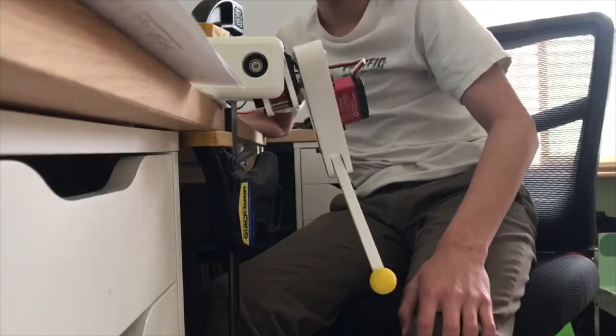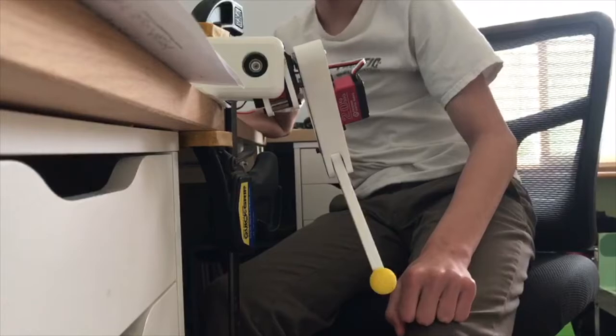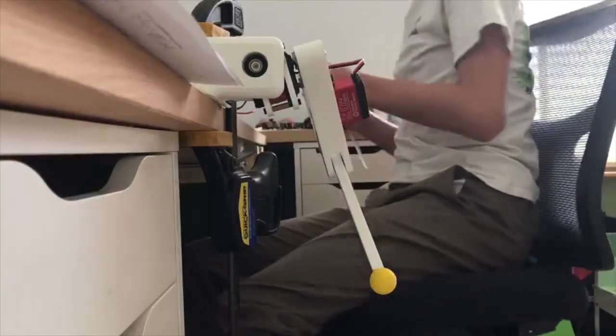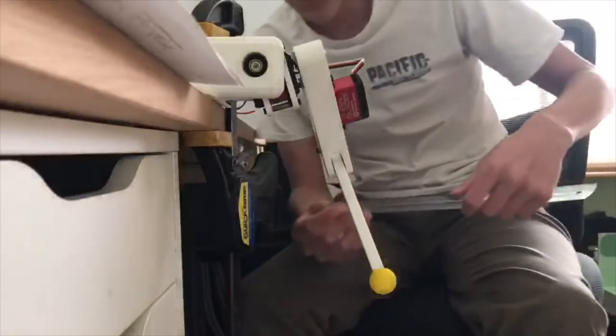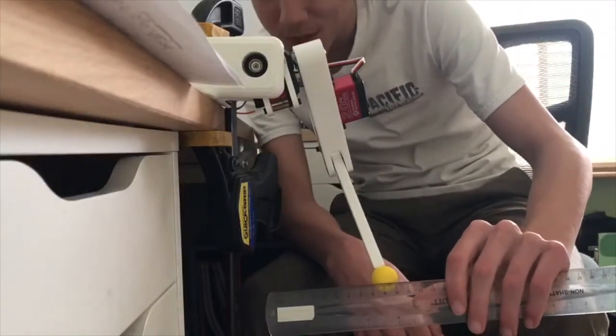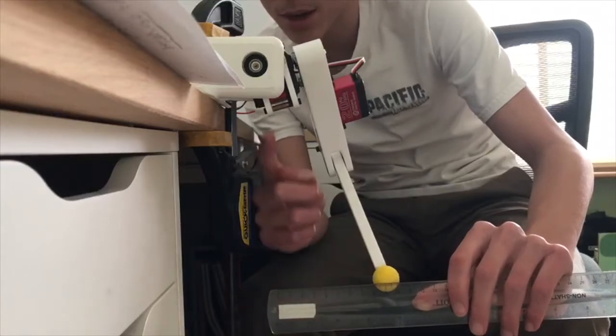And 100, so 100 is 100mm from the bearing. So with the ruler, this is 100, and you can see that this is right underneath the bearing.